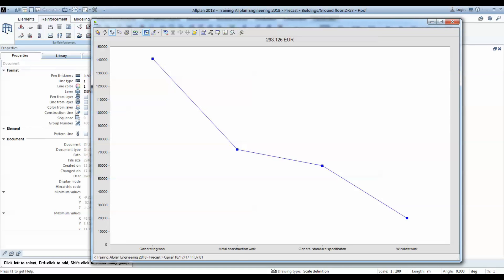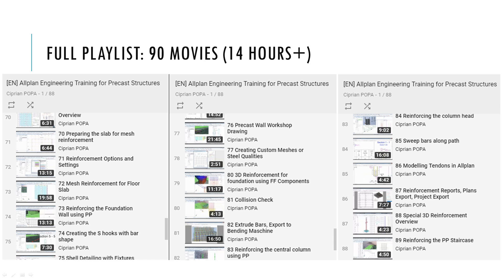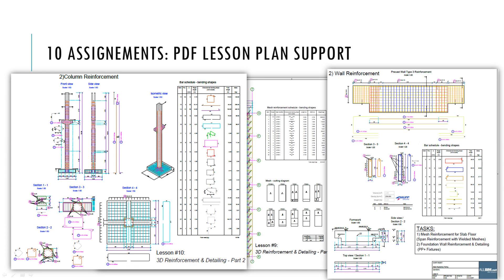The full playlist is made of 90 short movies with intuitive names so you can easily re-watch a certain topic. These movies can be streamed directly or downloaded and viewed later. You will also receive a PDF support document for each lesson, which will help you complete certain tasks and self-evaluate your Allplan knowledge. These PDFs can also serve as inspiration for your future projects.